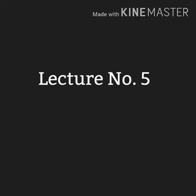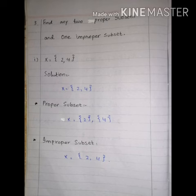Question number 3: Find any two proper subsets and one improper subset. Part number 1, given x is equal to {2, 4}. Two elements given in one set. First we will make two proper subsets and one improper subset.